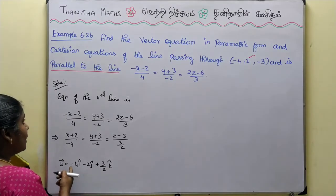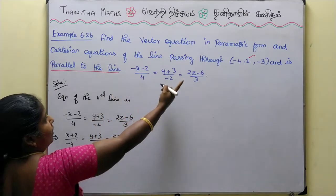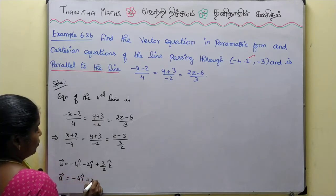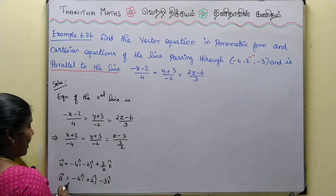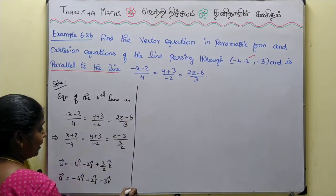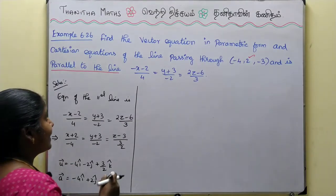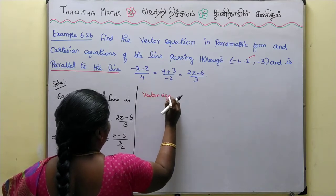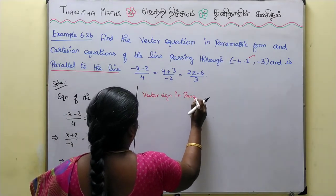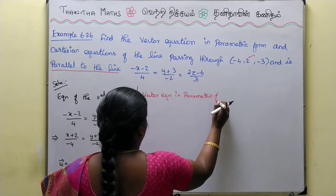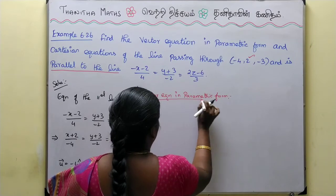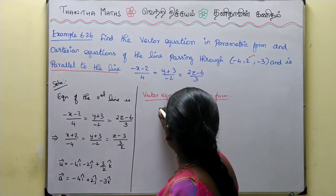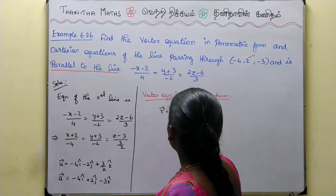We compare the u-vector. So a-vector is equal to minus 4i-cap plus 2j-cap minus 3k-cap. Now the answer is straightforward. The vector equation in parametric form: r-vector equals a-vector plus t times u-vector.